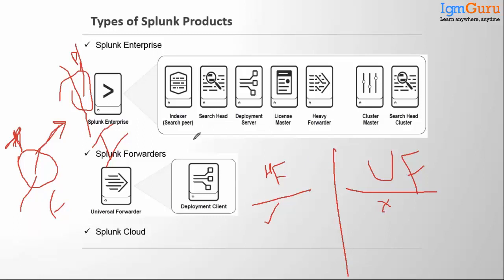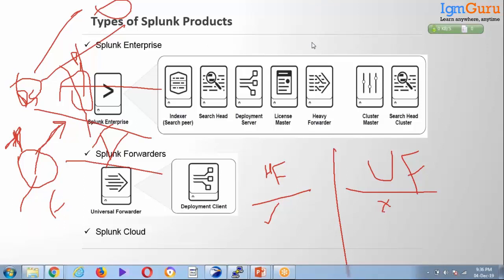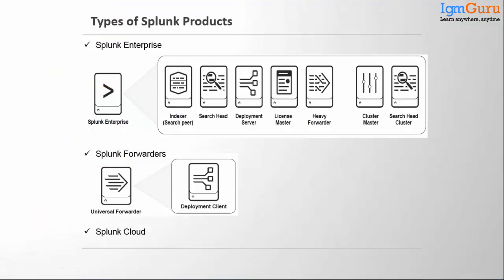Next is the deployment client. As I mentioned, the deployment server manages all the forwarders. The term 'deployment client' refers specifically to the forwarder when it is connected to the deployment server — same entity but different terminology from that perspective. Those are the different products and components of Splunk.